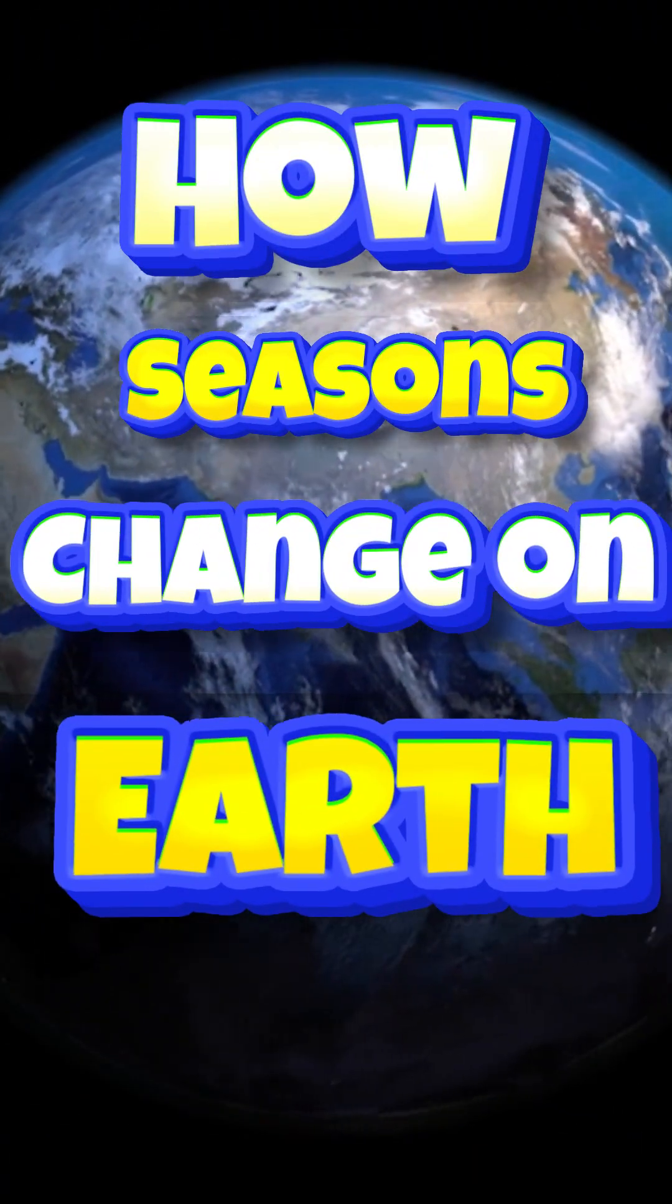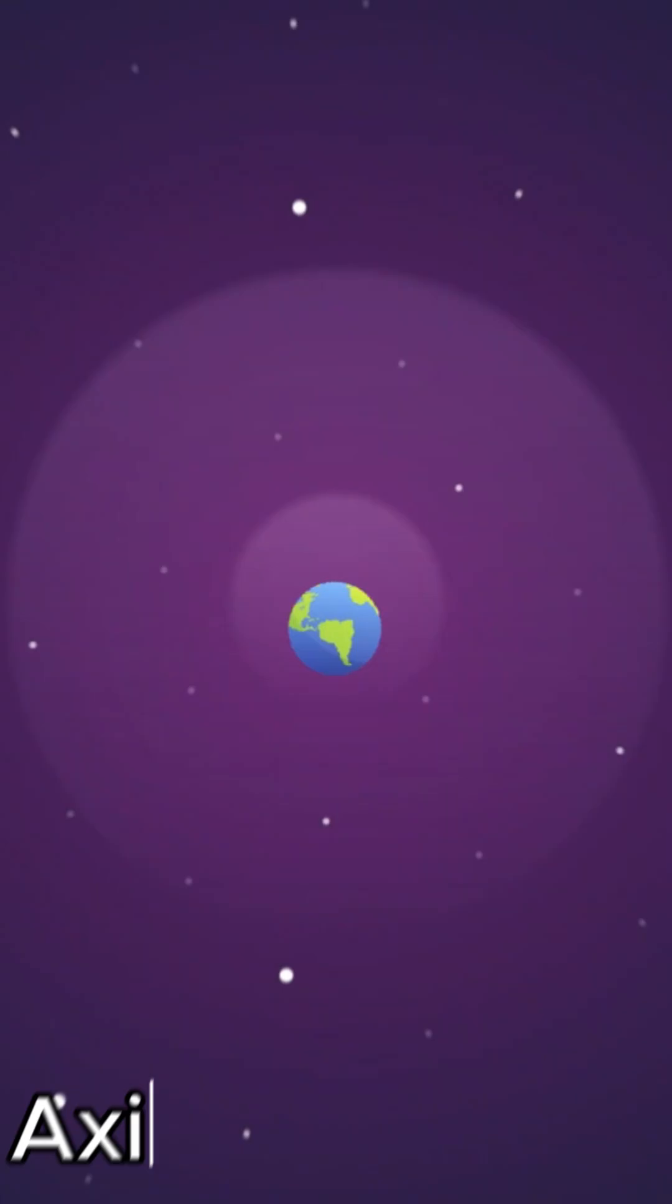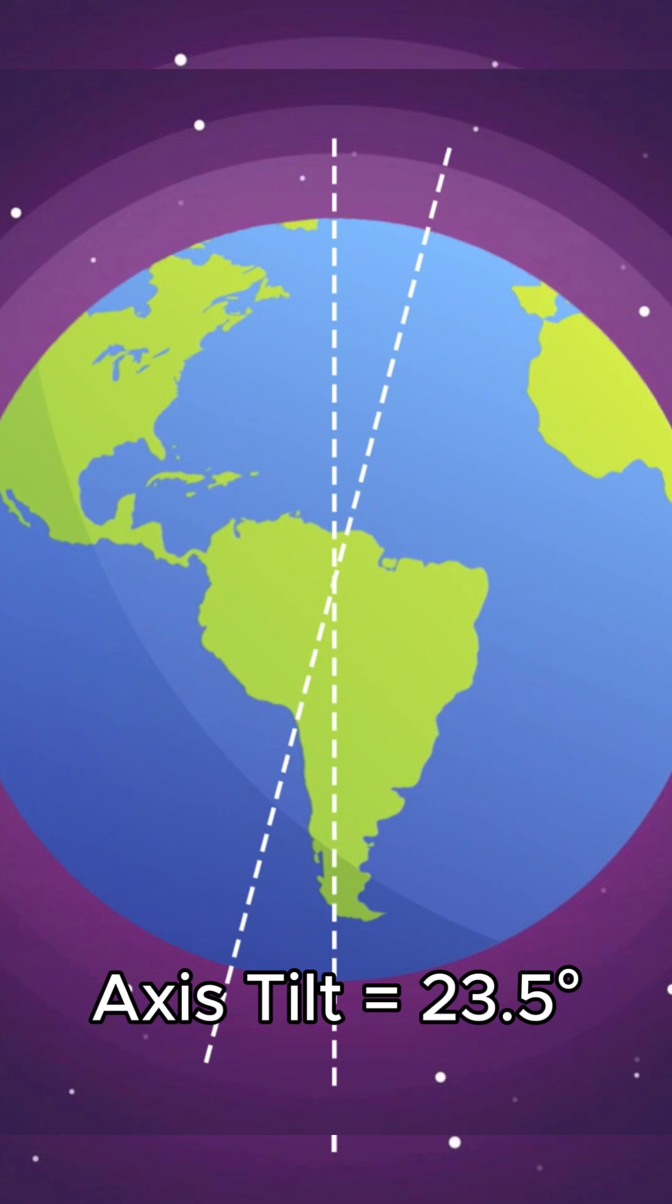How Seasons Change on Earth. Have you ever wondered why we experience spring, summer, autumn, and winter? Let's break it down in just one minute. It all comes down to Earth's tilt.